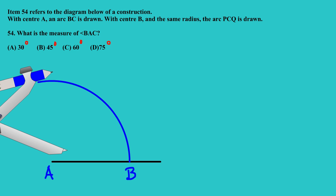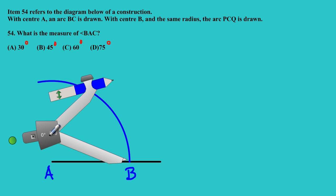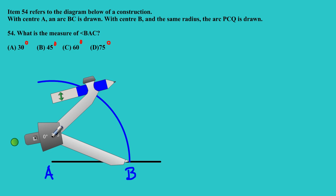So I'm going to open my compass to point B, and then I'm going to draw an arc BC. So really what I'll be doing, let me just change a color to distinguish. I can use the blue. So this is the arc BC.